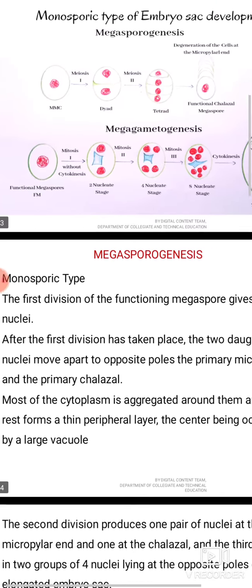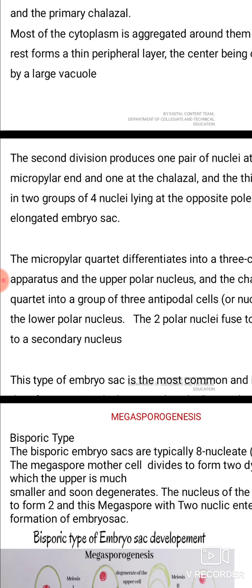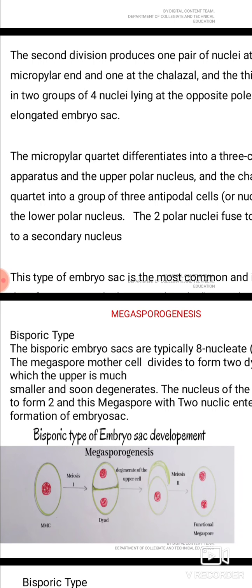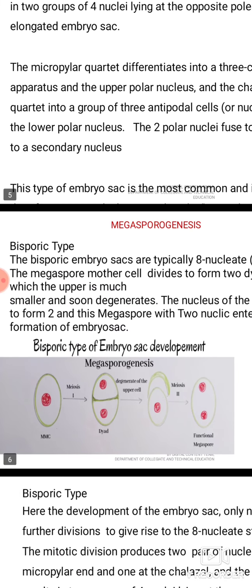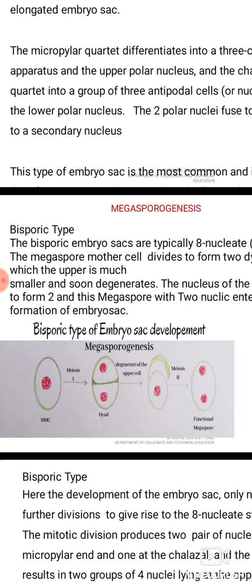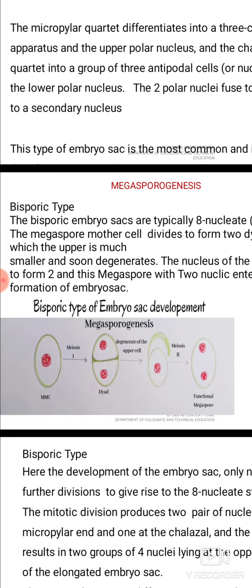Coming to the bisporic type. The bisporic embryo sac is typically eight-nucleate and is also known as the Allium type. The megaspore mother cell divides to form two dyad cells, of which the upper one is much smaller and soon degenerates. The nucleus of the lower dyad divides to form two nuclei, and this megaspore with two nuclei enters into the formation of the embryo sac.